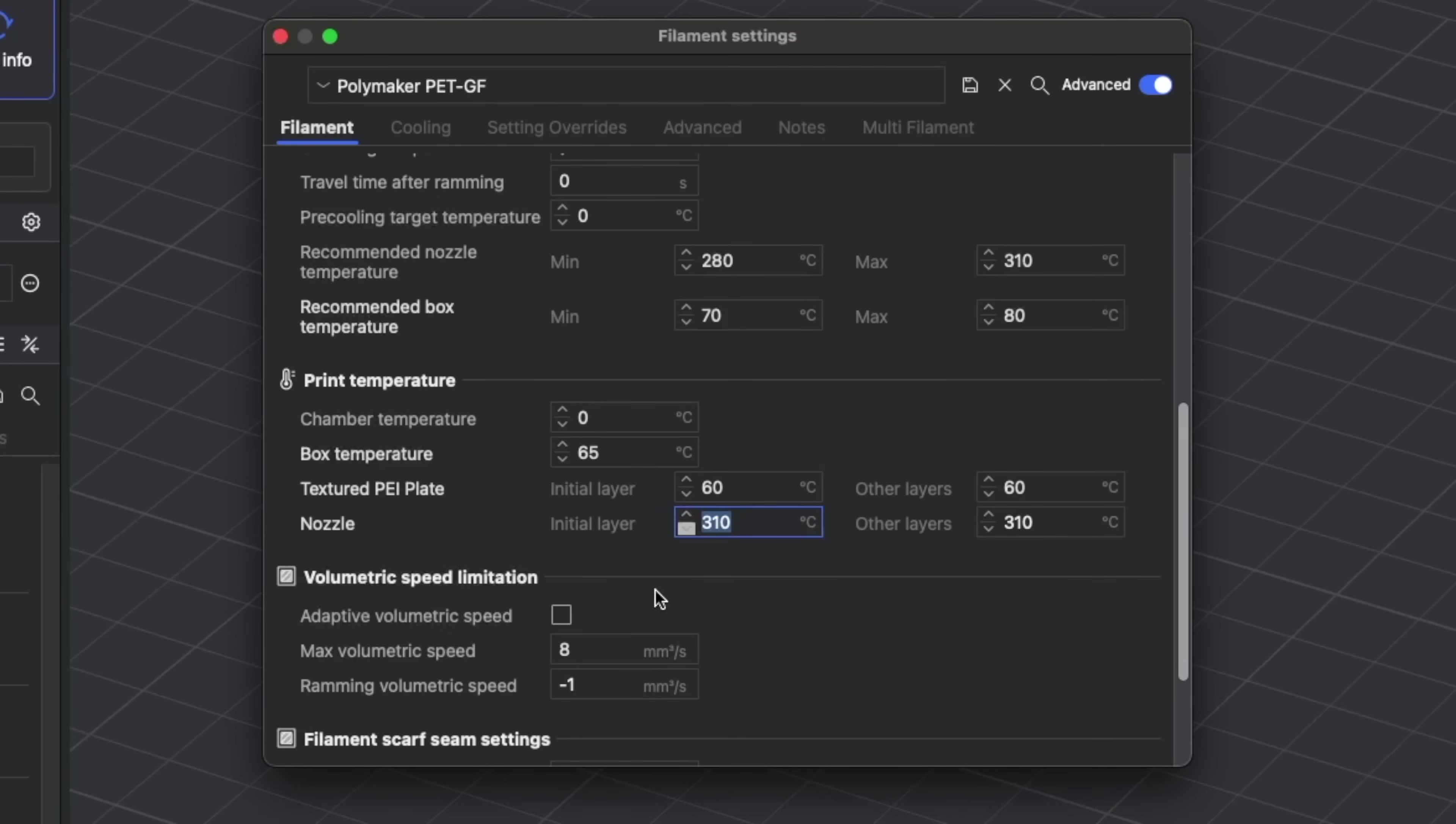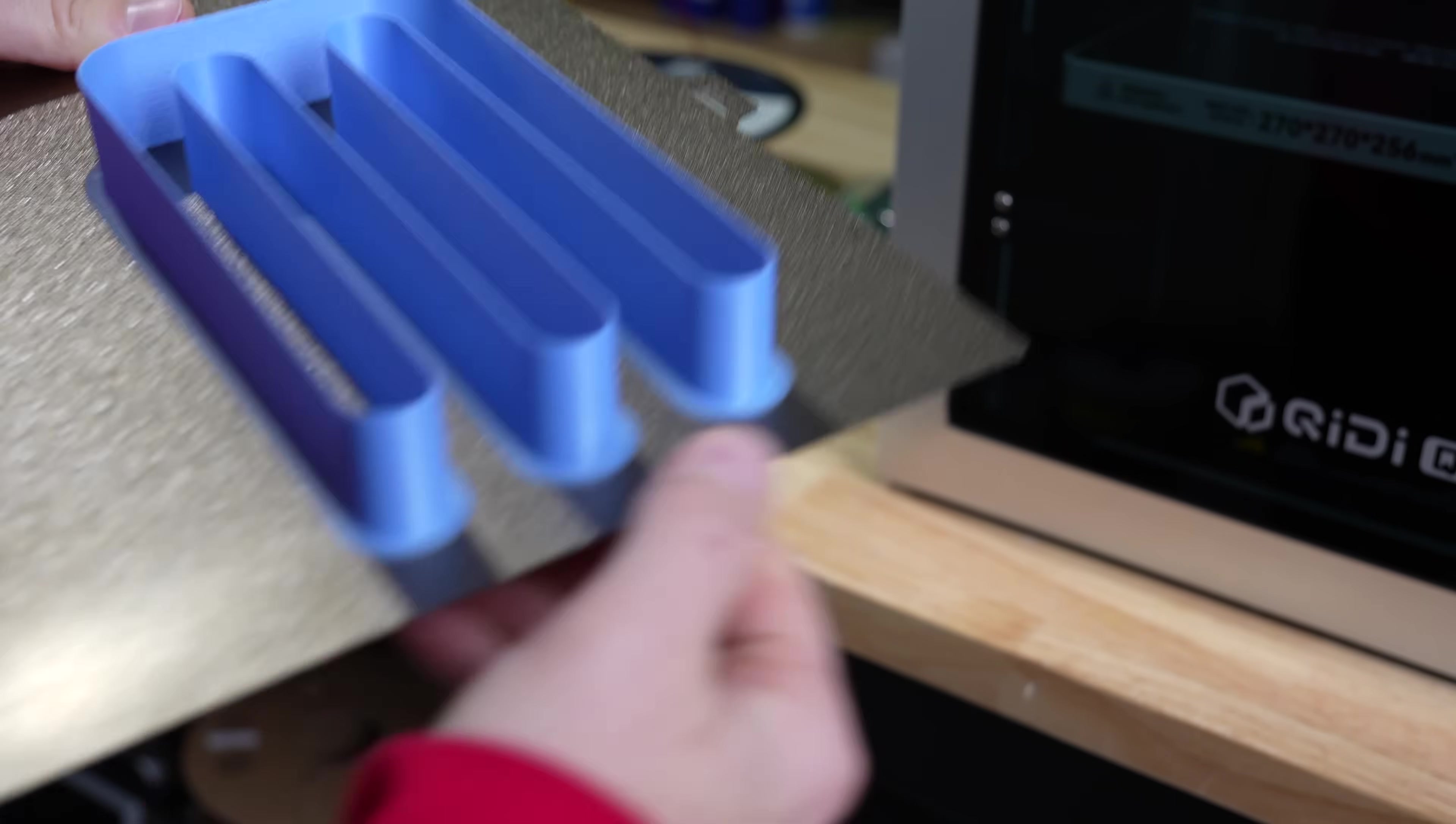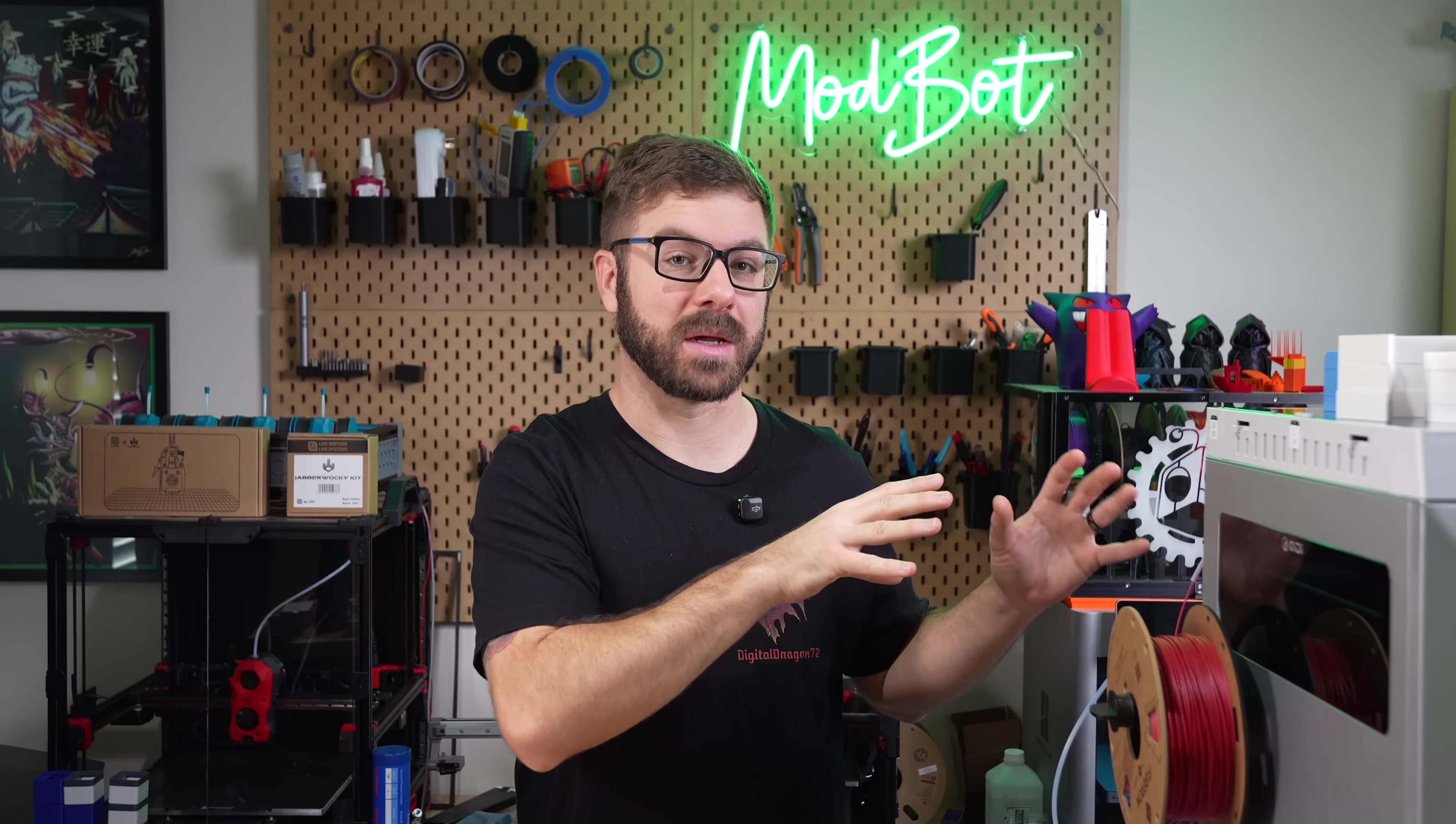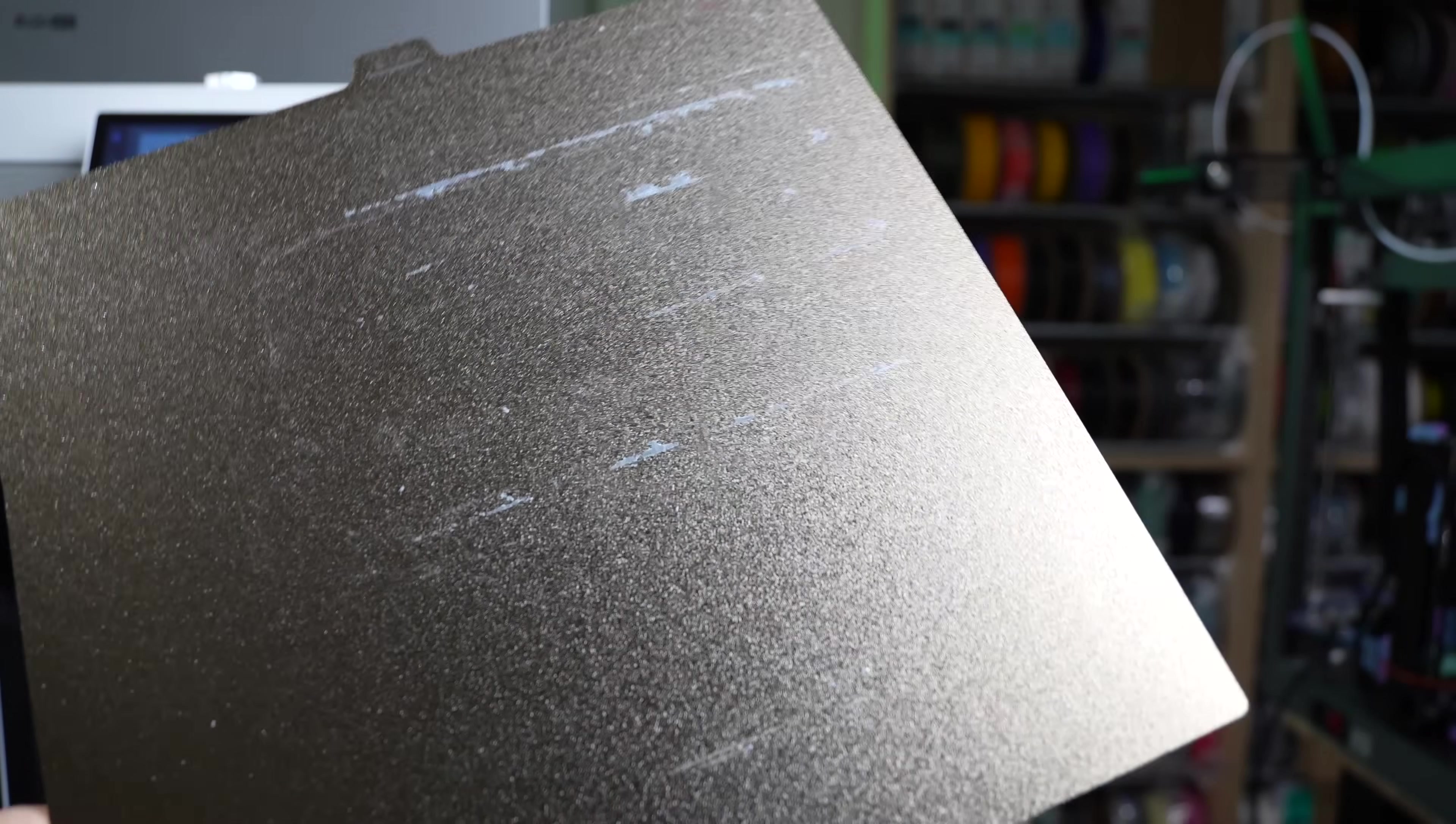A big issue I ran into with this second flow test is that the brim of the model basically bonded to my powder-coated PEI sheet. This was due to a combination of my first layer being a bit too close, so the material was being forced harder down into the build plate, as well as PET, just like PETG, sticking very hard to PEI. I spent quite a while trying to remove that material by cooling the plate, heating the plate, and even running additional prints over it, hoping that it would sort of adhere into that print, but my attempts were unsuccessful.